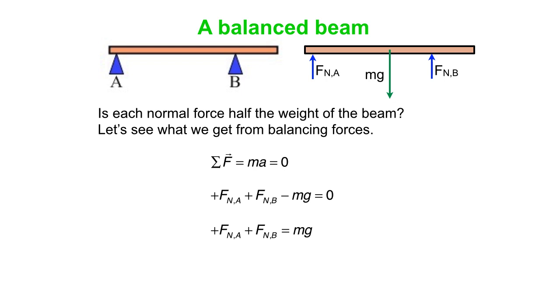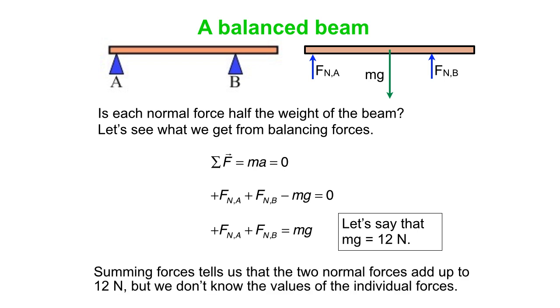So we have just simply three forces. We'll choose up to be positive. So the sum of the two normal forces minus the mg force has to equal zero. That tells us FnA plus FnB equals mg. If we happen to choose that mg is 12 newtons, then what we know from adding forces, from doing the sum of the forces, is that the two normal forces add up to 12 newtons, but we actually don't know the values of the individual forces. Are they 6 newtons and 6 newtons? Are they 10 newtons and 2 newtons? Who knows? If all we know about are forces, we actually can't solve the problem.